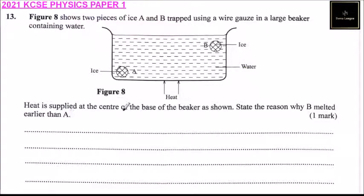Heat is applied at the center of the base of the beaker as shown. State the reason why B melted earlier than A.